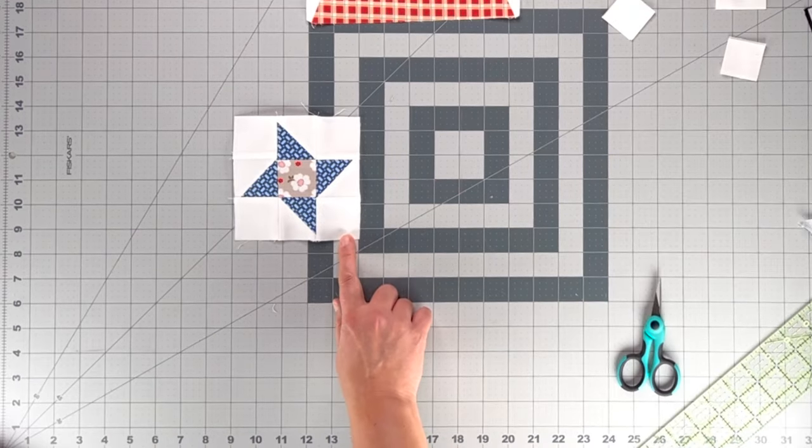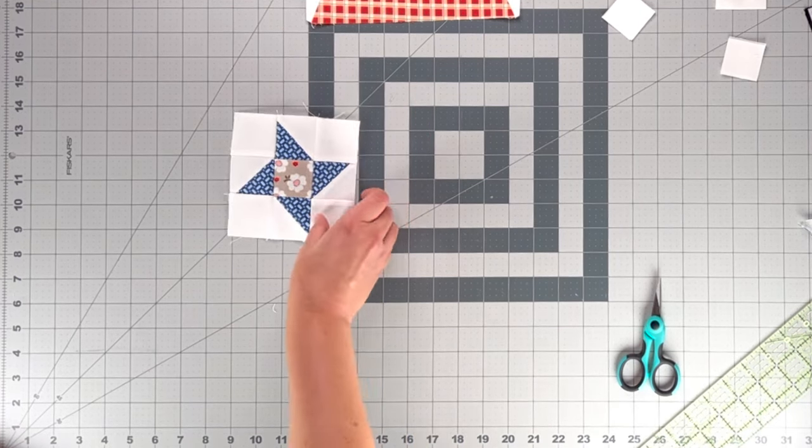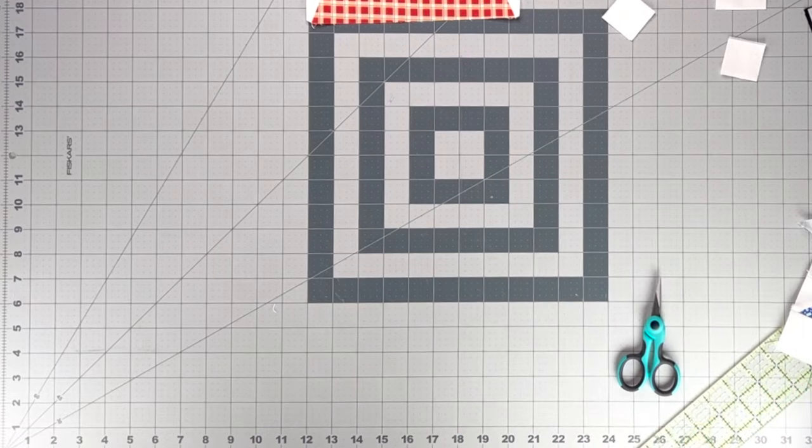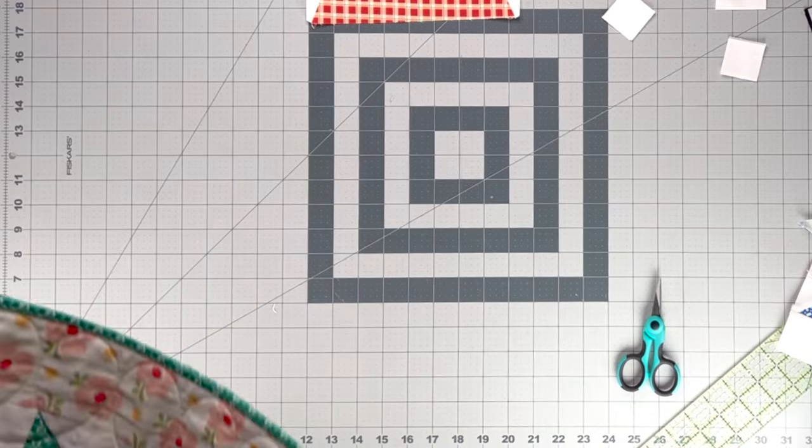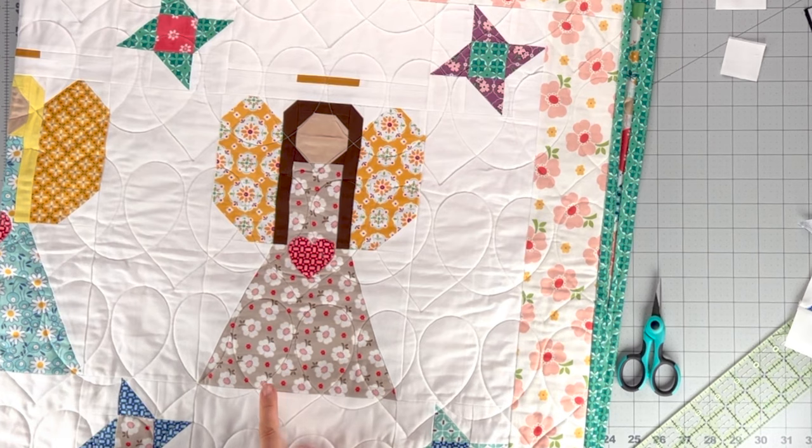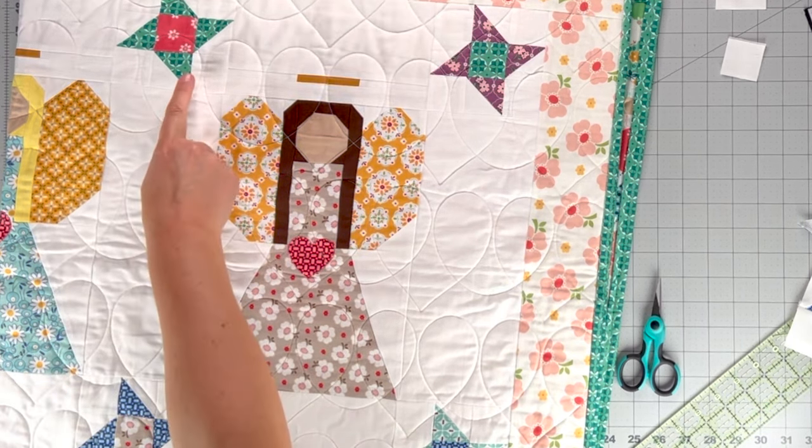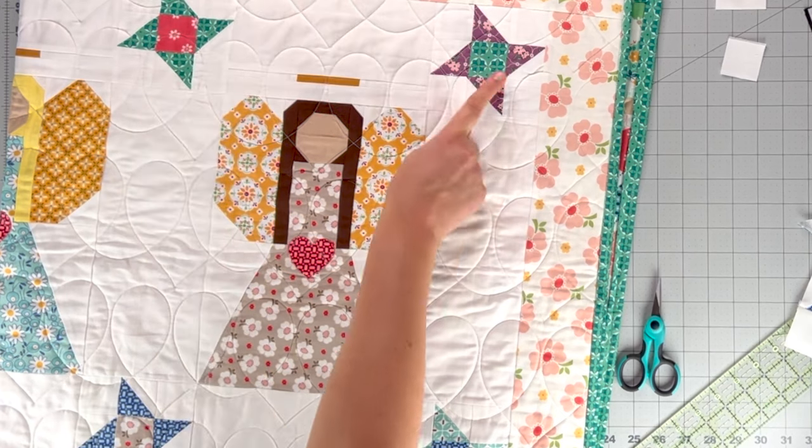Okay, here's our pretty little friendship block. And I will show you where these go in the quilt top. Here is a little bit of an up-close picture of the Guardian Angels quilt. And here are our friendship stars.